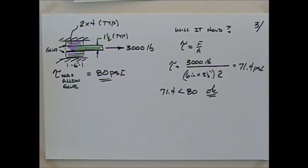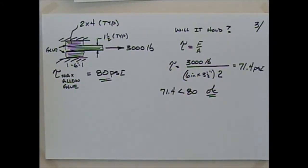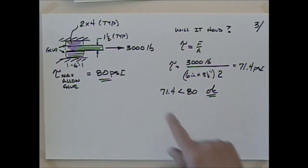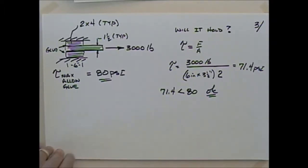They don't like to specify allowable shear values because that turns something you might buy for a hobby into something they take on a lot more liability for. Glue for building trusses or real airplanes will have those specs, and it's going to be a lot more expensive because they have to stand behind that number. Shear in wood is usually not that high — about 90 PSI — so that's a close call with our 71.4 PSI result.